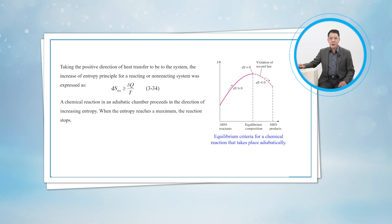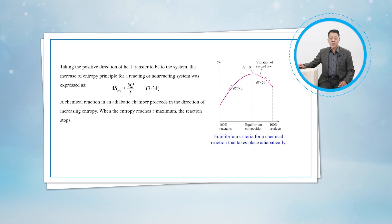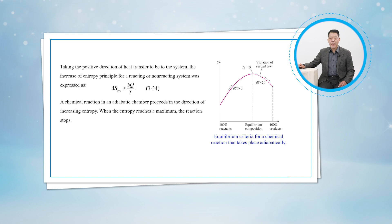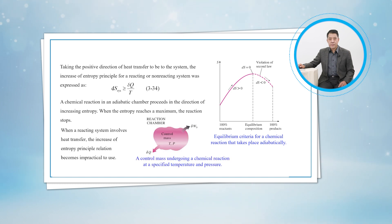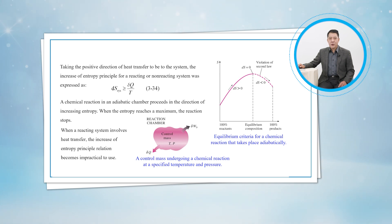When the entropy reaches a maximum, the reaction stops. Therefore, entropy is a very useful property in the analysis of reacting systems. When a reacting system involves heat transfer, the increase of entropy principle relation becomes impractical to use.